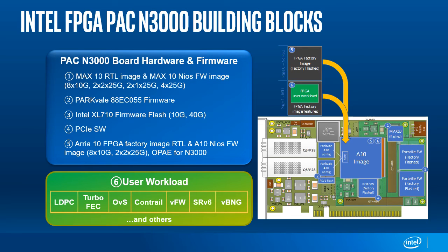Some of these user workloads include VRAN workloads such as LDPC and TurboFEC plus front-haul functions, NFVI workloads such as OVS, SRV6, and Contrail, and other VNF applications like Virtual Firewall and VPNG. You can find a list of partner workloads that are supported on the PAC N3000 on Intel.com.